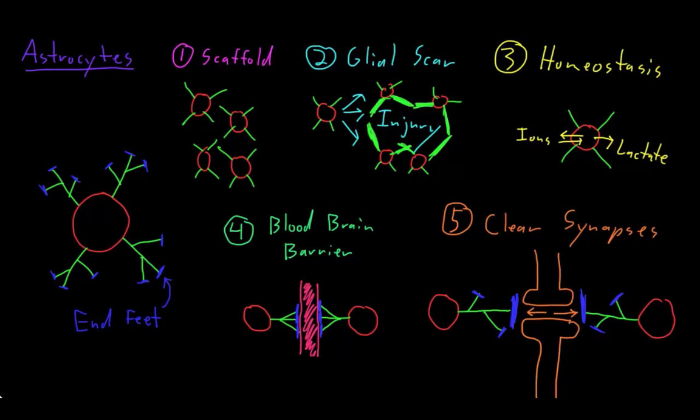In addition to these functions, astrocytes appear to influence neurons and other glia, and vice versa, through exchange of a variety of other substances. So as you can see, astrocytes are very hard-working cells in the central nervous system. No other cell of the nervous system appears to do such a huge variety of functions like the astrocytes do.